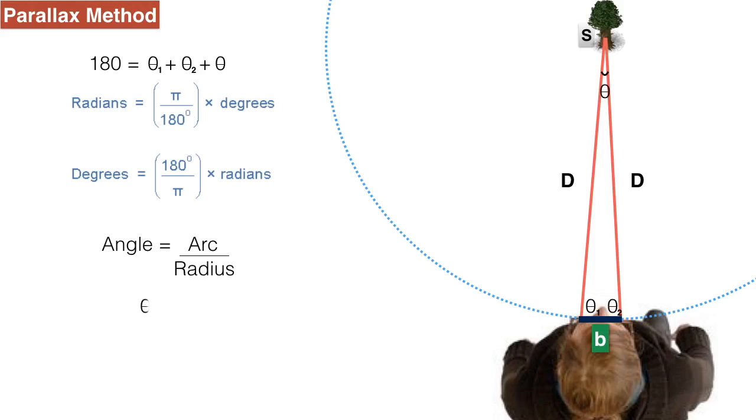Mathematically it is given as theta equals arc, that is b, upon radius, that is D. Now rearranging those terms, I can easily find out the distance between my subject and the observer.